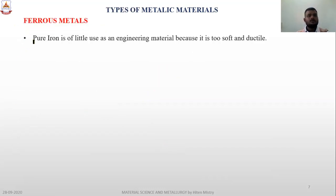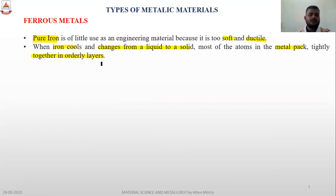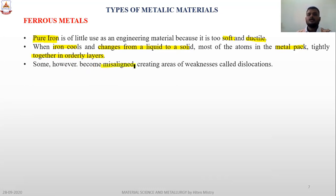Talking about ferrous metals — pure iron is often used as an engineering material because it is too soft and ductile. When iron cools from liquid to solid, most atoms pack tightly together in an ordered layer. However, they sometimes misalign, creating areas of weakness called dislocations — this is the main cause of improper behavior of a metal due to dislocation of an inter-metallic compound.